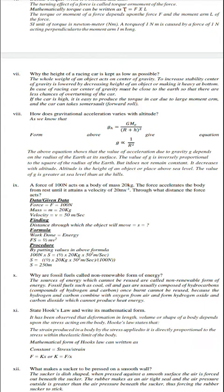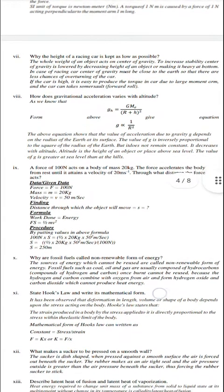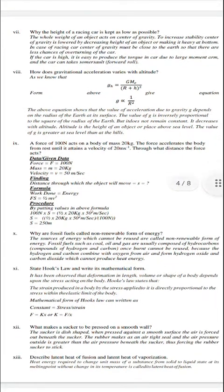Next question is a force of 100 newton acts on a body of mass 20 kg. The force accelerates the body from rest to velocity of 50 meter per second. Simply numerical - given data: force 100 newton, mass of body 20 kg, force accelerates the body from rest to velocity equals 50 meter per second. Find the distance through which the force acts, distance s equals question mark.